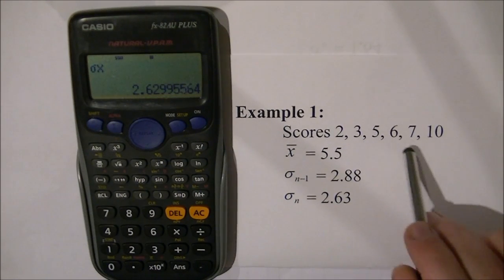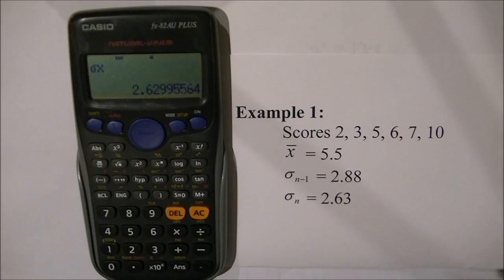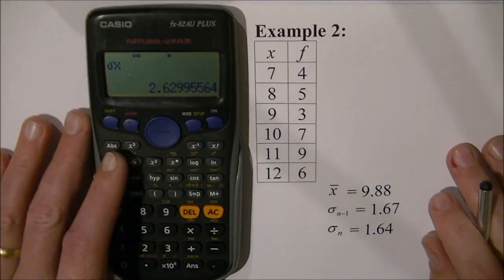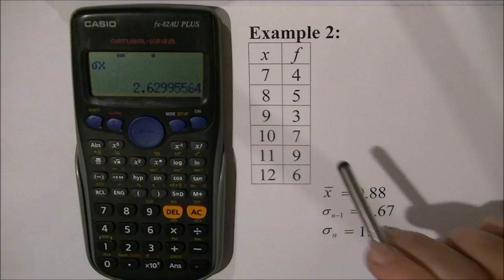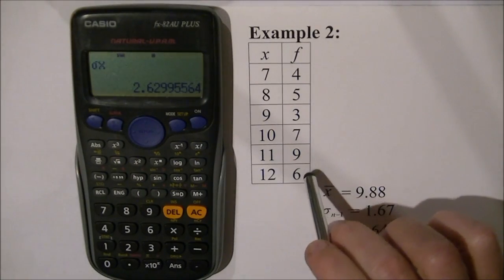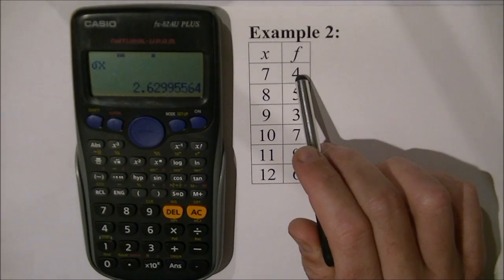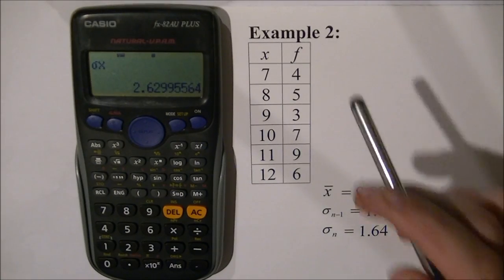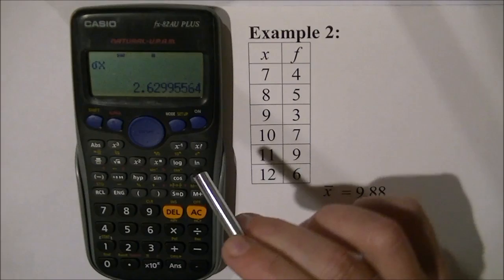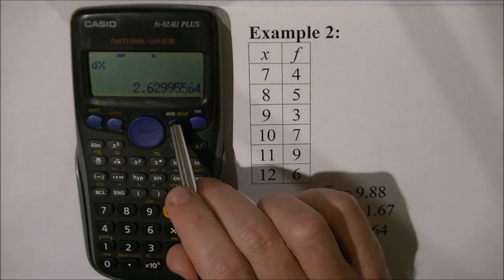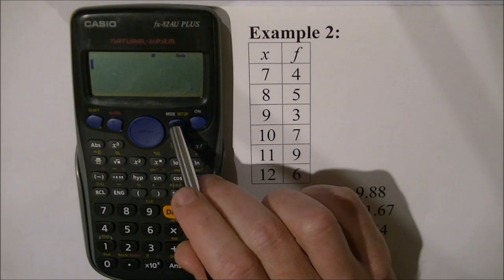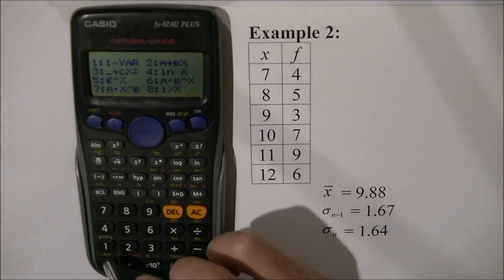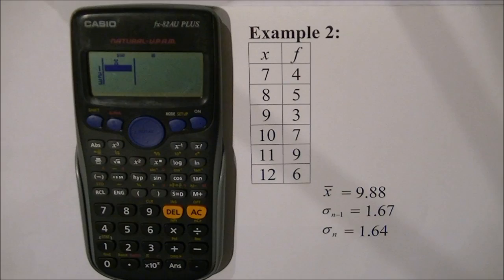That's entering individual scores into the table. The next example I want to show you is using your calculator with a frequency distribution table when you know there's a frequency of more than one for a score. For example, seven is happening four times, eight five times, and nine three times. I'm going to clear the table first by going out of statistics mode — mode one — and going back into statistics mode, mode two, then option one, and you see the table is empty again.